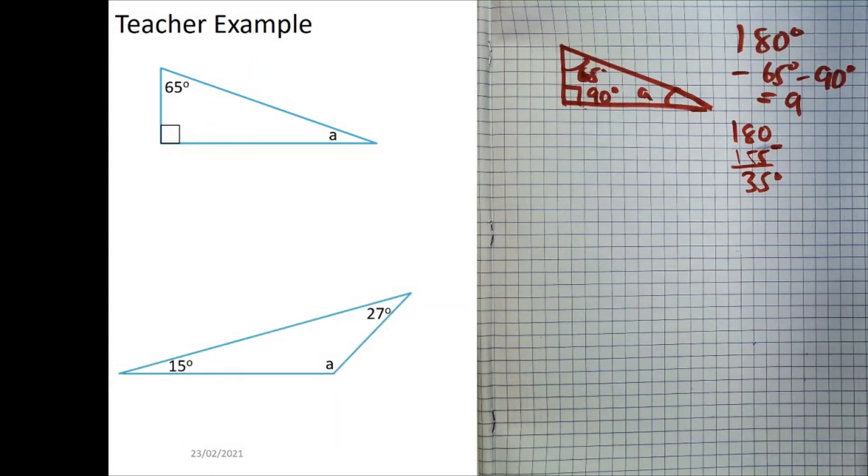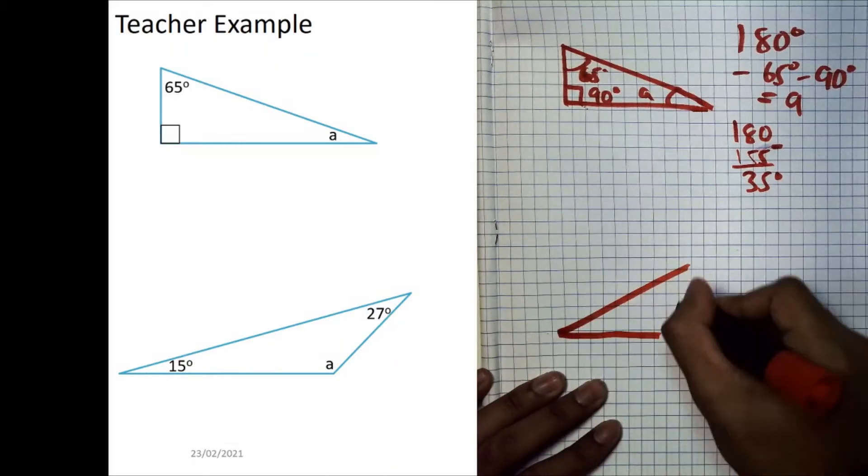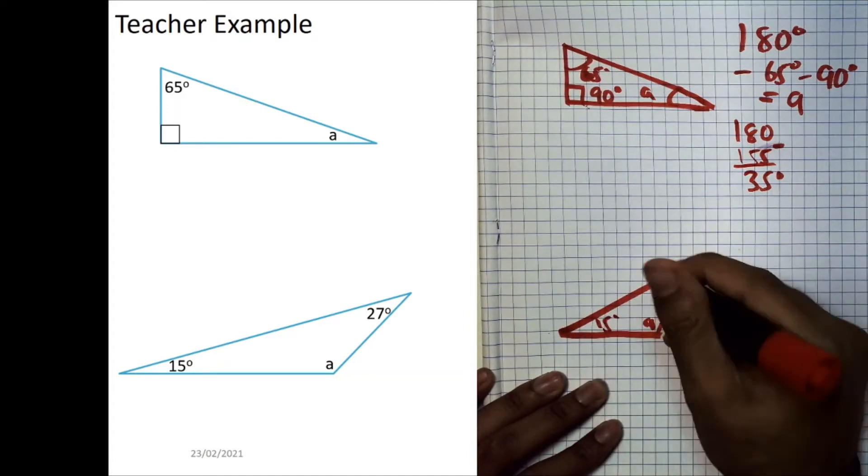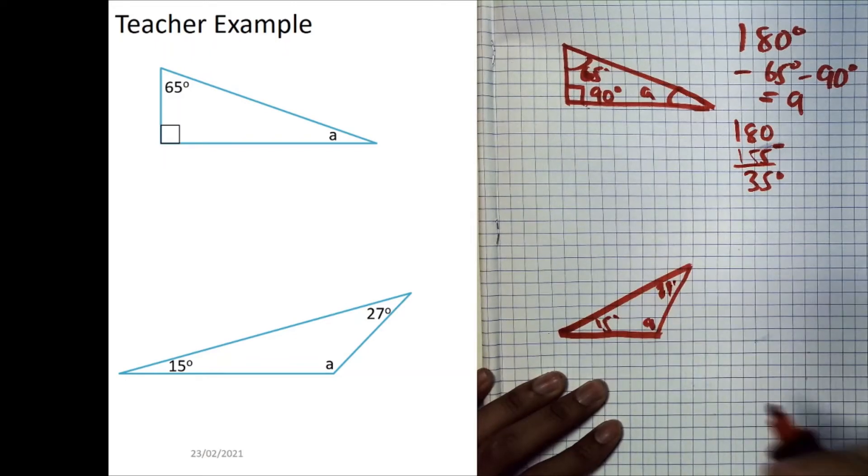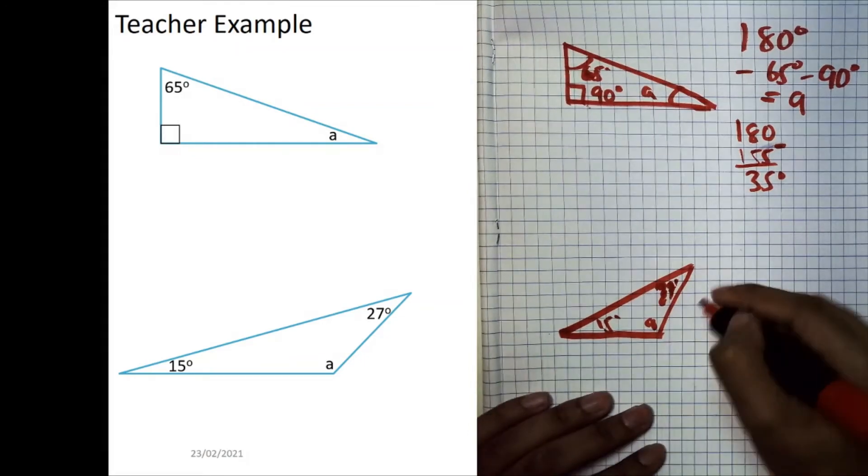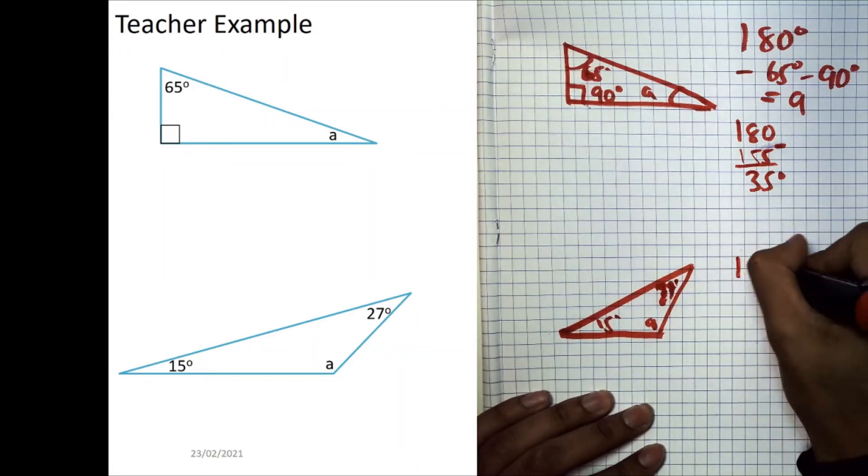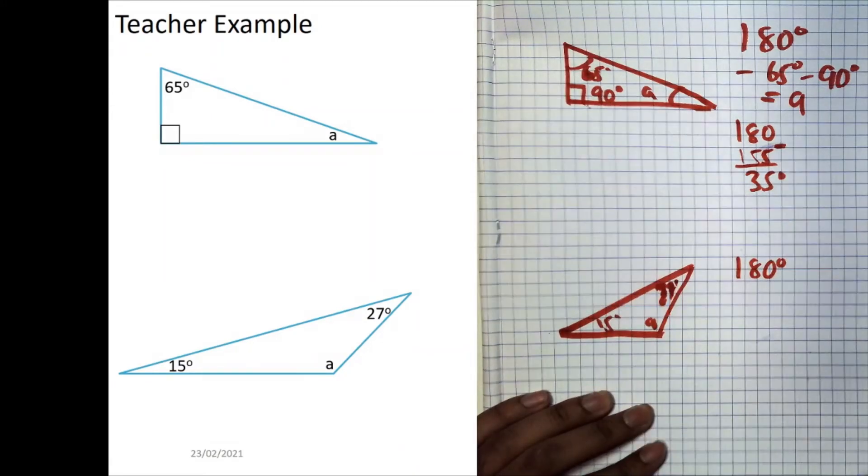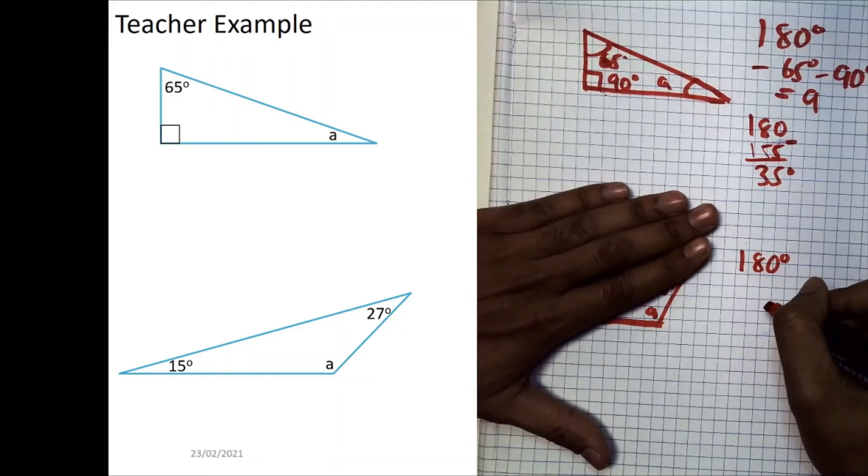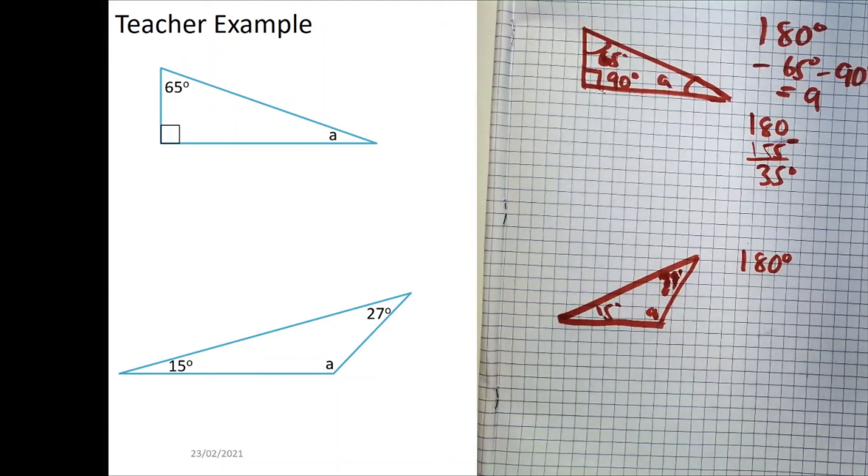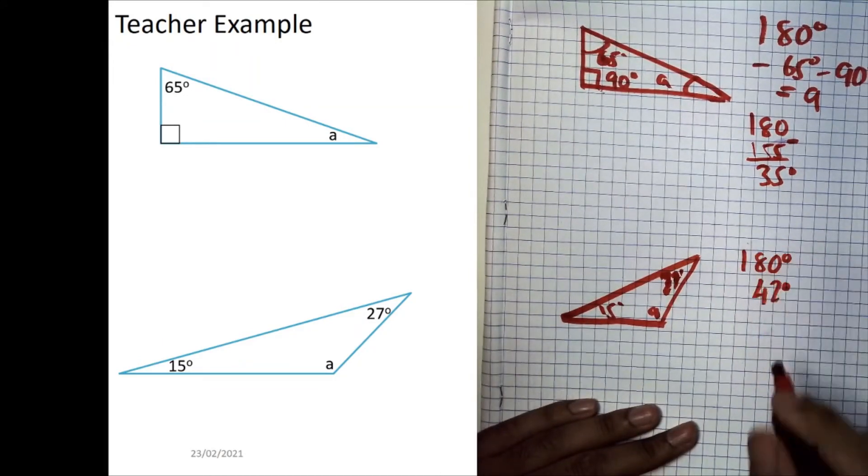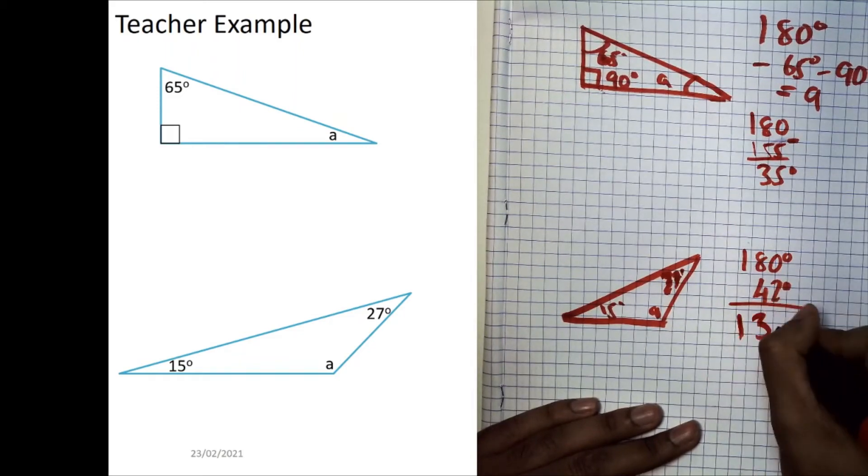Now, for the second question, we have a triangle, it looks like a scalene triangle, but it doesn't matter, because remember, all angles in a triangle, they add up to equal 180 degrees. So, again, the total triangle, it will equal to 180 degrees. If I were to subtract 15, this 15 over here, and this 27 degrees, I would get left with just A. 15 plus 27 degrees, that would give us 42 degrees, so I'm going to go directly to doing 180, subtract 42 degrees. When I tally this up, I should get 138 degrees.